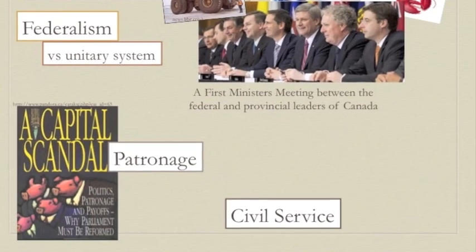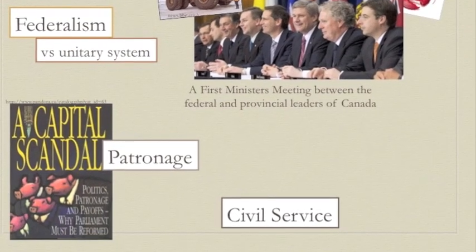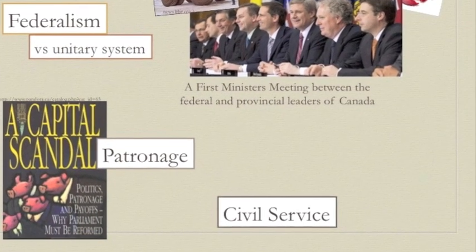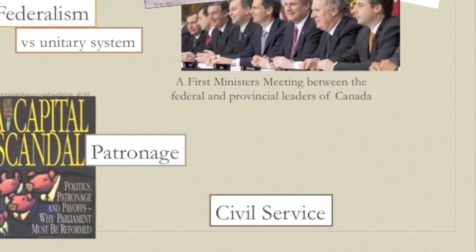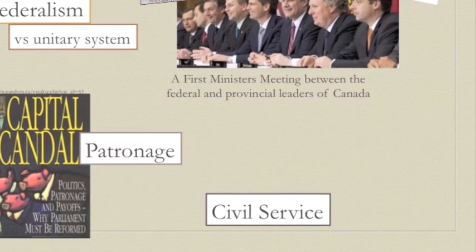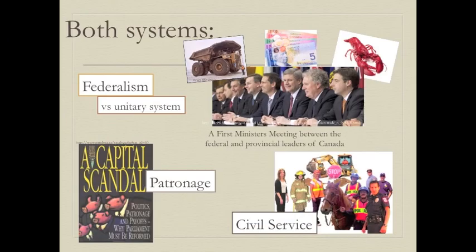And the civil service — it's the group of people who work for the government but aren't elected. Usually when we talk about civil servants, we're talking about all the people who work in government departments to help cabinet ministers do their job, like the accountants who work for Revenue Canada. Public school teachers, police officers — they're all civil servants because they work for the government.